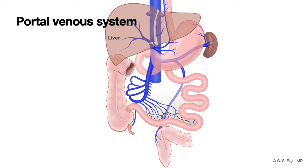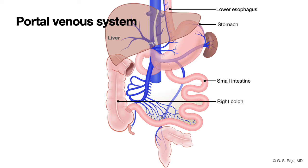So what does the portal venous system drain? It drains the lower esophagus, stomach, small intestine, right colon, left colon, and rectum, as well as the spleen and pancreas.